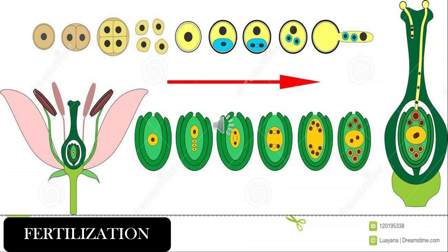Fertilization is the fusion of the nuclei of male and female gametes. In flowering plants, the pollen grain is the male gamete. The ovule inside the ovary is the female gamete. After a pollen grain reaches the stigma of the same kind of flower, it germinates into a pollen tube.